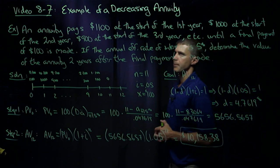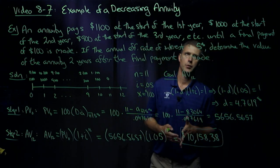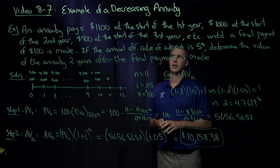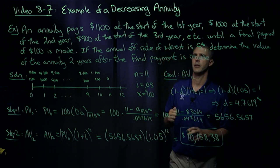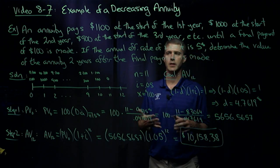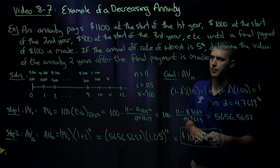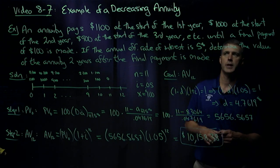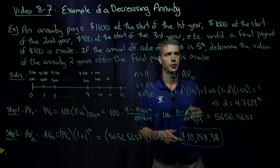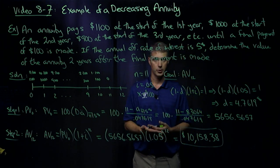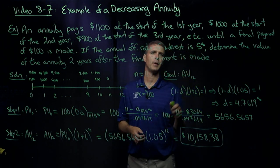All right, so we have an annuity that pays $1,100 at the start of the first year, $1,000 at the start of the second year, $900 at the start of the third year, and so on until a final payment of $100 is made. The annual effective interest rate is 5%, and we want to determine the value of the annuity two years after the final payment is made.